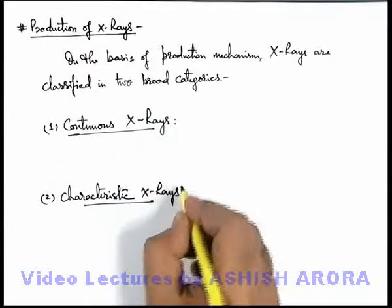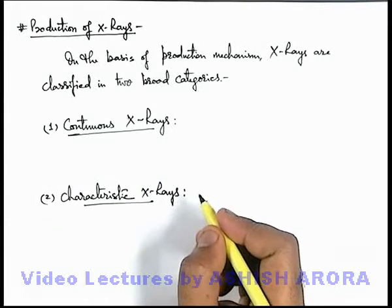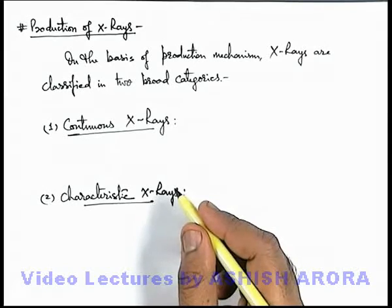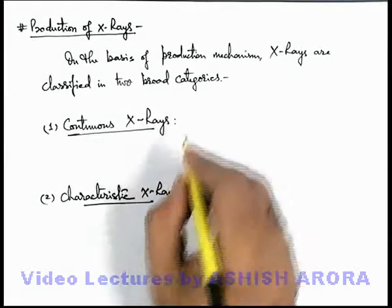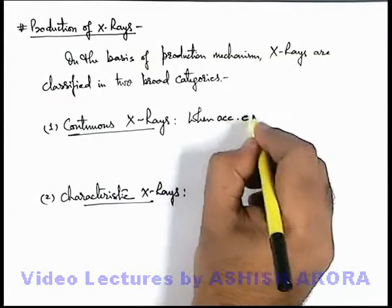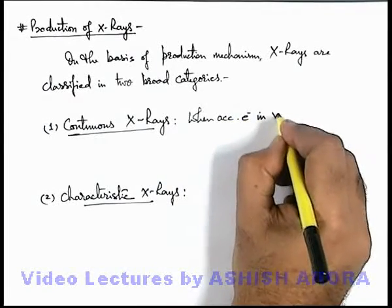Now these are produced again by braking of electrons in the discharge tube, as we already discussed in the previous section. The basic difference is when an accelerated electron in the vacuum tube...